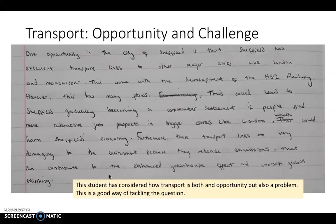The next student looks at transport and answers it slightly differently, discussing transport as both an opportunity and a challenge, which is a very high-level way of answering it. Their paragraph reads: 'One opportunity in Sheffield is that it has excellent transport links to other major cities like London and Manchester, which came with the development of the HS2 railway. However, this has many flaws — it could lead to Sheffield gradually becoming a commuter settlement if people find more attractive job prospects in bigger cities like London, which could harm Sheffield's economy. Furthermore, these transport links are damaging to the environment because they release emissions that contribute to an enhanced greenhouse effect and worsen global warming.'